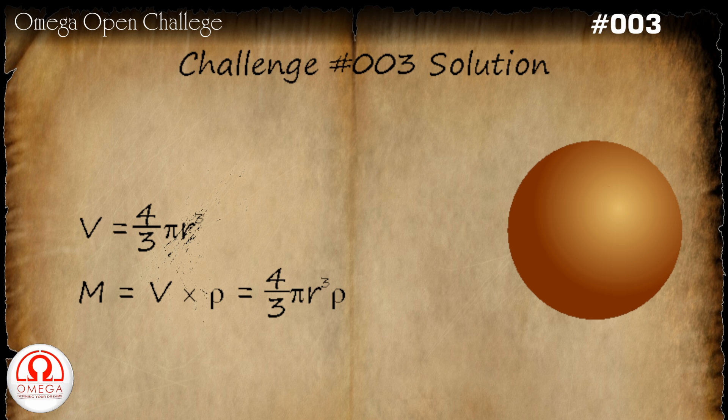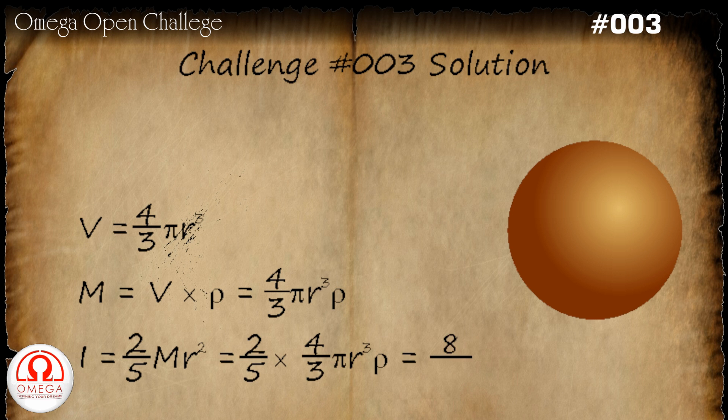The moment of inertia of a solid sphere is given by 2 by 5 m r square. Putting the value of mass, we get 2 by 5 into 4 by 3 into pi r cube into rho or 8 by 15 pi r to the power of 5 into rho.